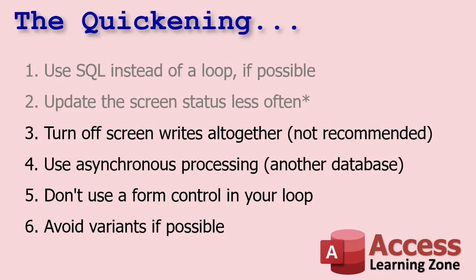You can turn off screen writes altogether with the echo command. I've covered this in other videos, but I don't recommend it for a couple of reasons. Number one, it doesn't solve your problem — if your event takes a few minutes to run, the user might close Access or kill it in Task Manager because they think it's locked. You still want to update them every couple of seconds. Also, if you turn echo off and an error aborts your loop without turning echo back on, your database will appear to have crashed.